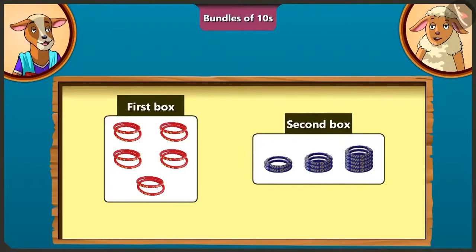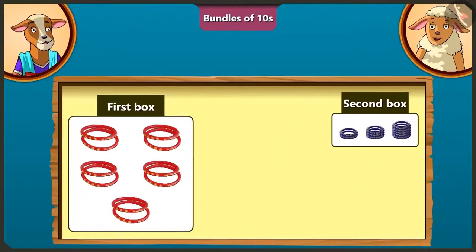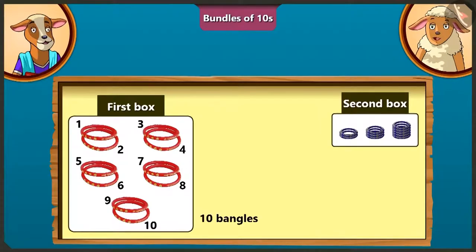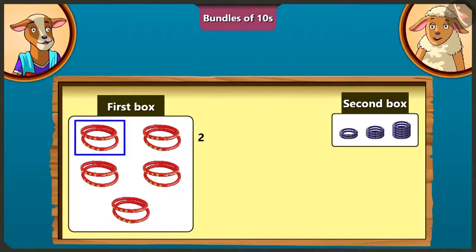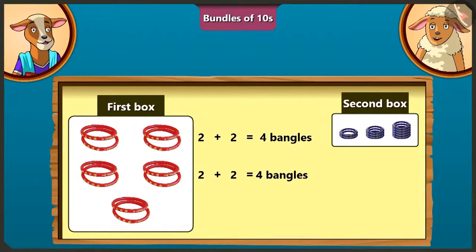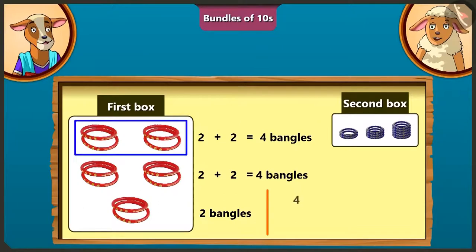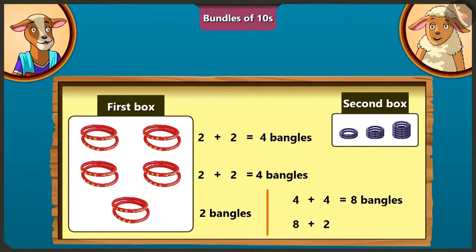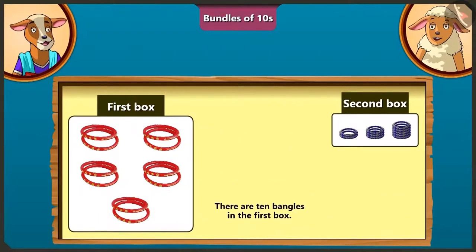There are two boxes of bangles. The first box is counted: one, two, three, four, five, six, seven, eight, nine and ten bangles. Ma'am explains we don't have to count one by one — in the first row there are two and two, four bangles; the second row also has four bangles; the third row has two bangles. So four plus four is eight, and eight plus two is ten bangles in the first box.